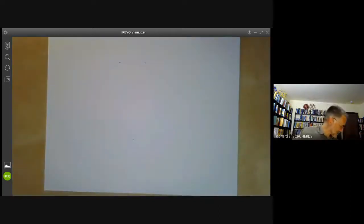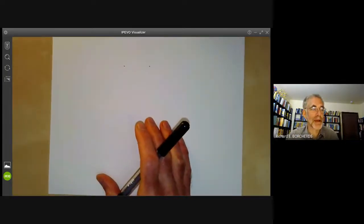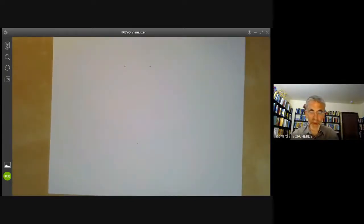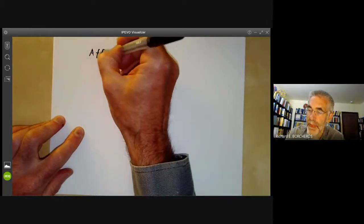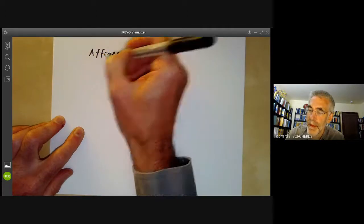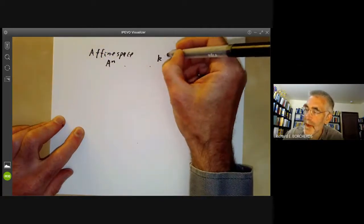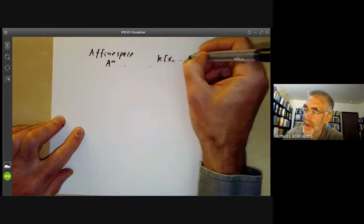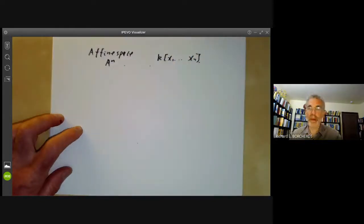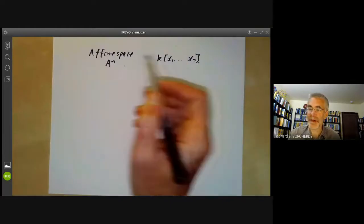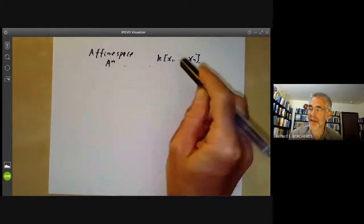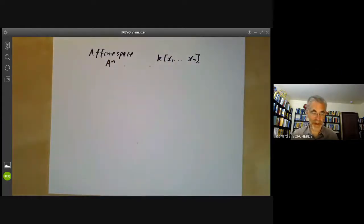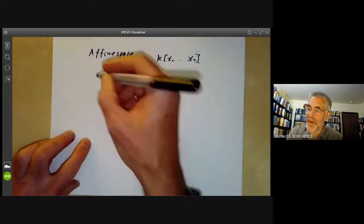So the weak and the strong Nullstellensatz give us the sort of correspondence between affine space A^n and the ring k[x1,...,xn]. So this is the coordinate ring of this affine space. And remember, we said earlier that anything you could do for affine space had an analogue for this ring and so on. And we can now fill in some of these points.